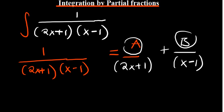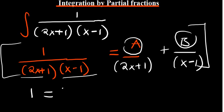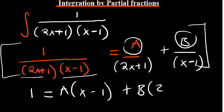From this step we want to find A and B. We multiply throughout the entire equation. If you multiply this part with what is on the denominator you are going to remain with 1. Then the 2x+1 cancels out leaving A multiplied by (x-1), and the other side gives you 2x+1. So in short you equate 1 equal to A multiplied by (x-1) and B multiplied by (2x+1).